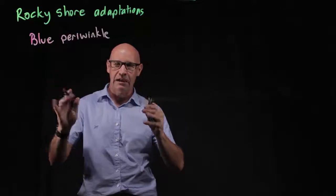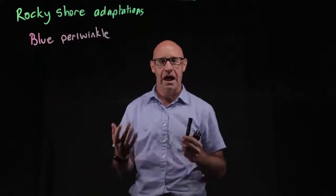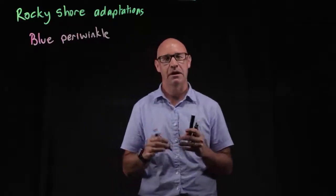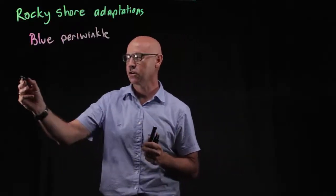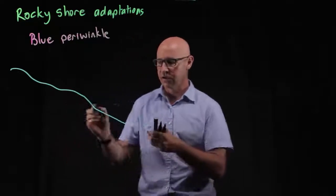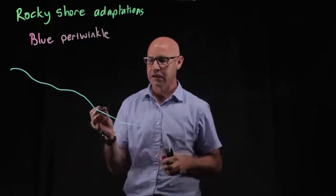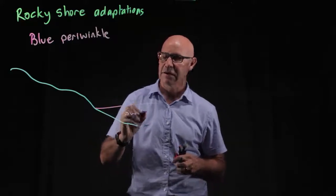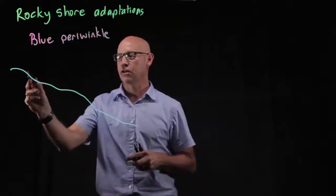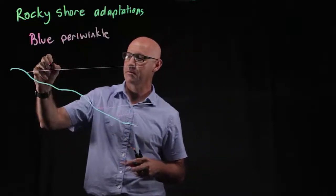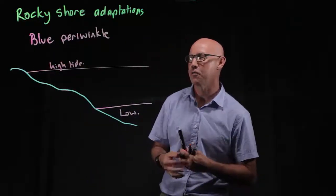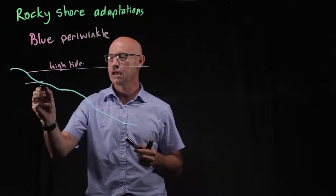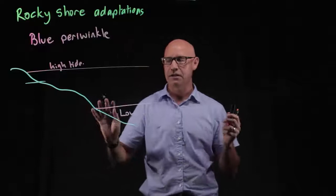It tends to live primarily in the upper part of the tidal zone or upper littoral zone. So if we draw a rocky shore here, this is affected by tide. The low tide mark is here and the high tide mark is up here. We'd find our blue periwinkle probably in this zone here in the upper littoral zone.